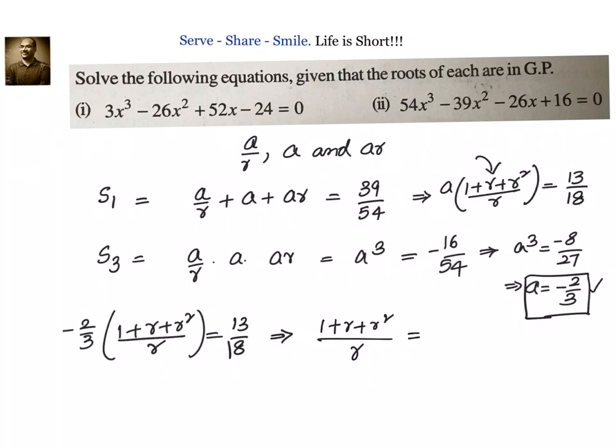is equal to 13/18 × -3/2. 3 will go 6 times, so we will have (1 + r + r²)/r equals to -13/12. Let's do cross multiplication: we will have 12r²